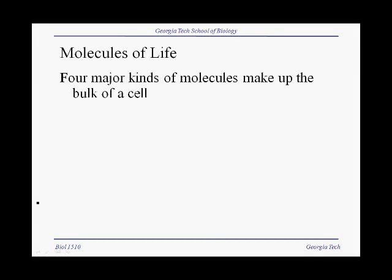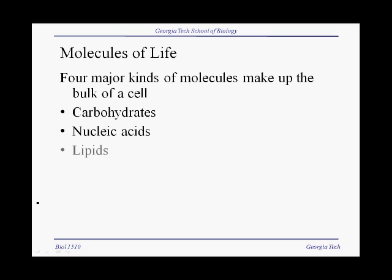There are four different kinds of macromolecules, meaning very large molecules, that make up the bulk of cells. These are carbohydrates, or polysaccharides, nucleic acids, meaning DNA and RNA, lipids, including fat, and proteins.